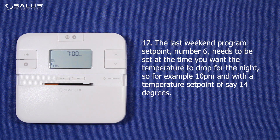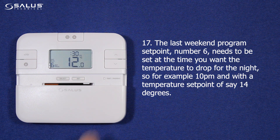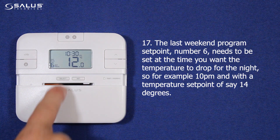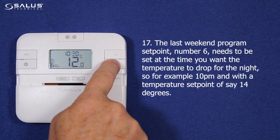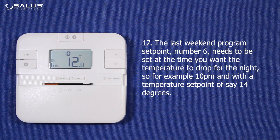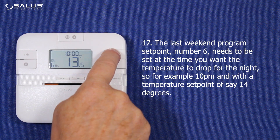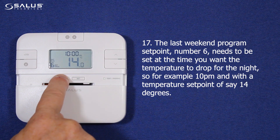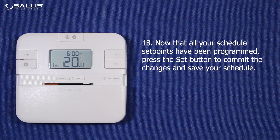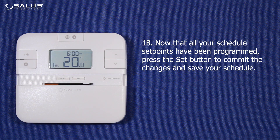Step 17: The last weekend program set point, number 6, needs to be set at the time you want the temperature to drop for the night, so for example 10 p.m., and with a temperature set point of say 14 degrees. Step 18: Now that all your schedule set points have been programmed, press the set button to commit the changes and save your schedule.